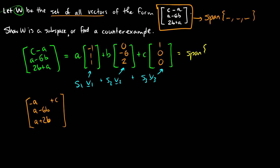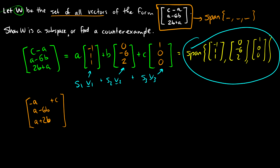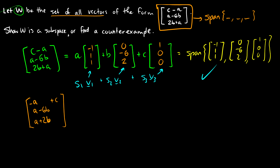So we can see that W is equivalent to the span of three vectors: (−1, 1, 1), (0, −6, 2), and (1, 0, 0). Since the span of any set of vectors in a vector space is a subspace, W is indeed a subspace.